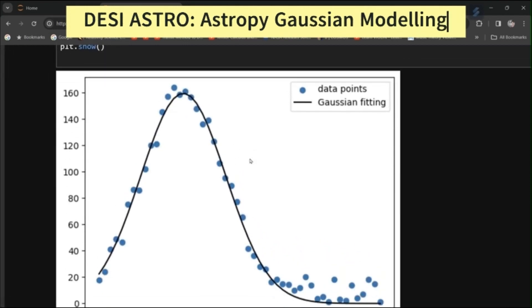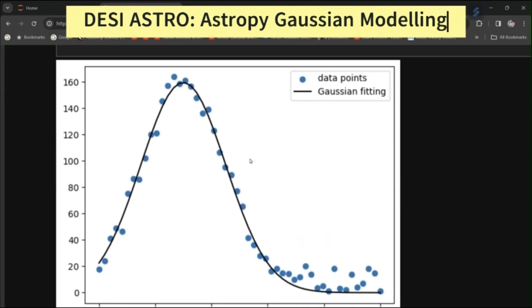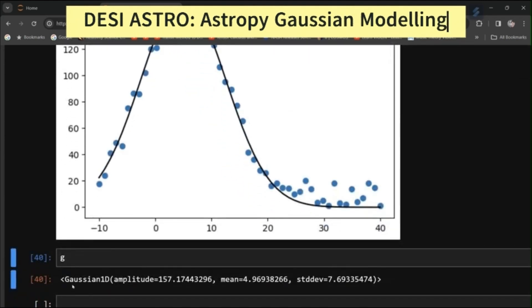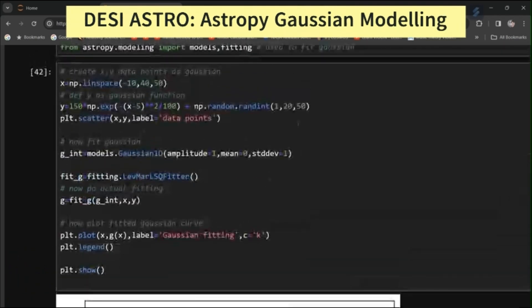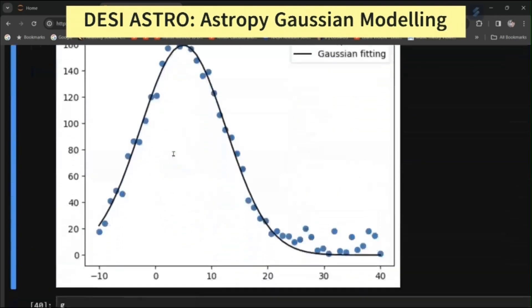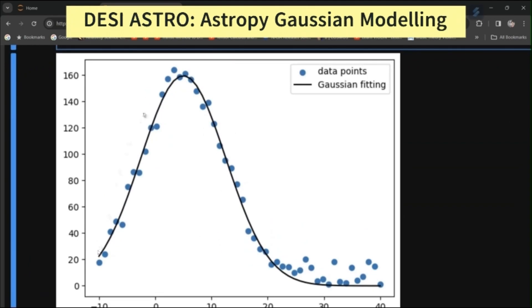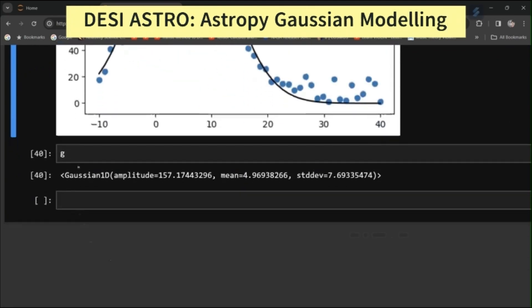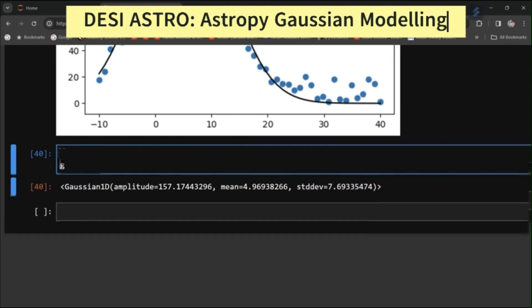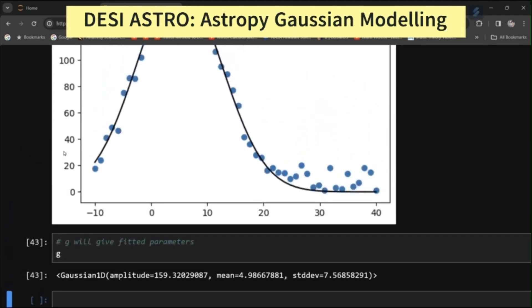So this way you can fit a Gaussian using Astropy to the scatterplot and you can also obtain its fitted parameters. Your initial value is this one, 101. But your fitted parameters have this value. g will give fitted parameters. So this way you can do it.